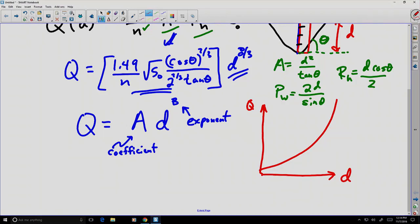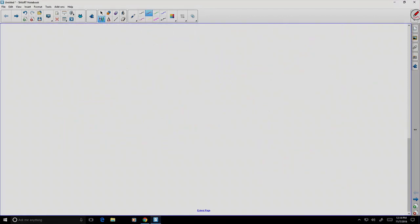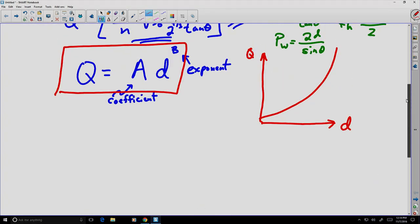So the interesting thing about equations of this form, in this exponential form, is that we can manipulate them using logarithms. And this is a pretty common tactic when we're trying to analyze complex systems. I'm going to go ahead and take the logarithm of both sides of this equation. And when I do so, I get the logarithm of Q is equal to the logarithm of the other side, A d to the b power.